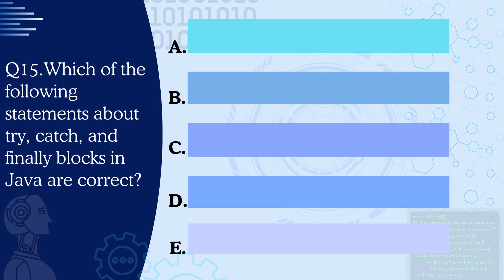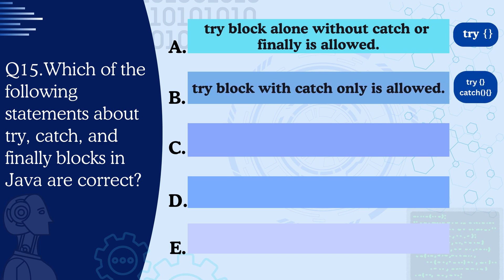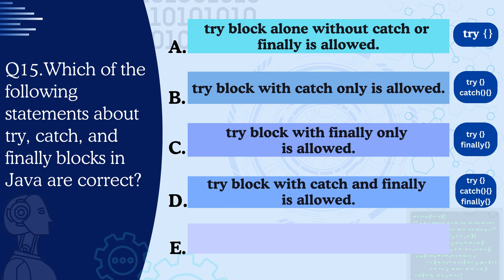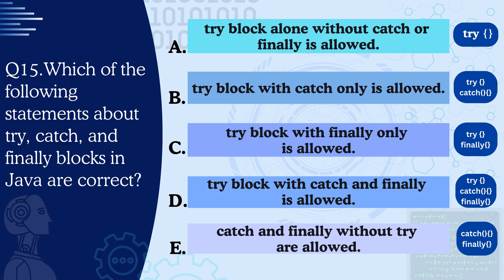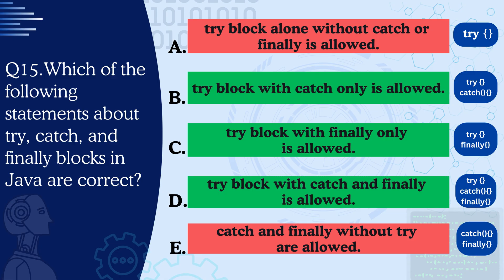Question 15: Which statements about try, catch, and finally blocks in Java are correct? A — try block alone without catch or finally is not allowed. B — try with catch only is allowed. C — try with finally only is allowed. D — try with both catch and finally is allowed. E — catch and finally without try are not allowed. So B, C, and D are correct.